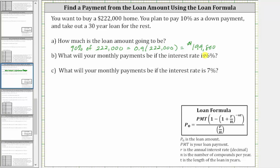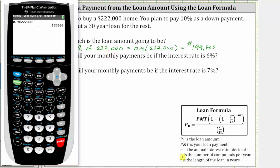And therefore the loan amount is $199,800. If you were asked to find the down payment, we would find 10% of 222,000, which would be 0.1 times 222,000, which would be 22,200. So another way to find the loan amount would be to take $222,000 and subtract $22,200.